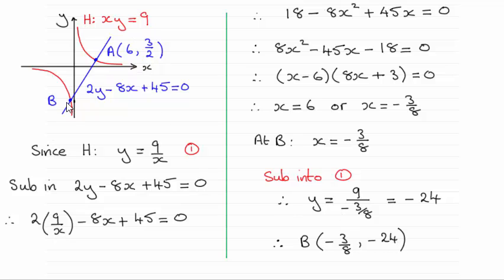As you can see here, the coordinates of B would both have to be negative, and that is a good check. So it's just a question of taking our equation for the normal and equating it with the equation for the hyperbola, just doing simultaneous equations.